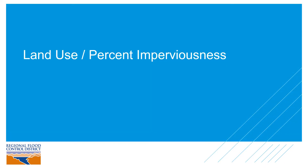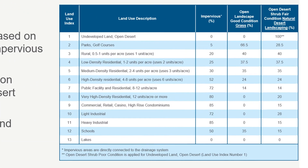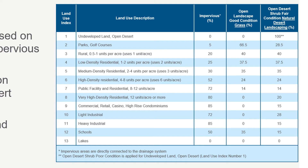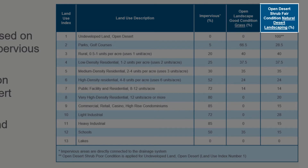Next, let's talk about land use and percent imperviousness. Land use data for the 2018 MPU is a crucial component of the overall plan because it directly impacts the amount of runoff that will occur for a given area. Each MPU category is composed of three main components: percent impervious area, open landscaping in good condition or grass, and desert shrub in fair condition or desert landscaping.